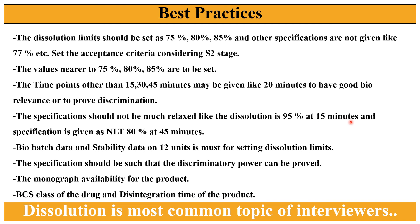For example, if dissolution is 95% at 15 minutes and the specification is given as Q not less than 80% at 45 minutes, there is no discrimination in this type of acceptance criteria and the agency will ask to tighten the specification limits. Biobatch data and stability data on 12 units must be considered while setting dissolution limits. The specification should be such that discrimination power can be proved; otherwise, if you set a relaxed specification, you will not be able to prove the discrimination of your dissolution method or test conditions. The monograph availability of the product should always be checked before setting the specification. BCS class of the drug substance and disintegration time of the drug product should also be kept in mind.